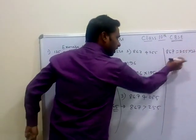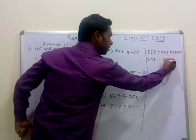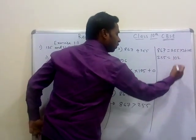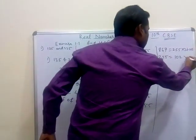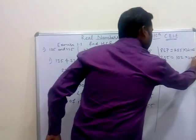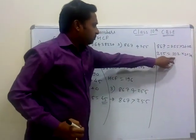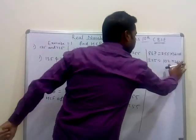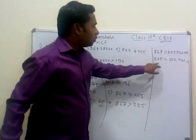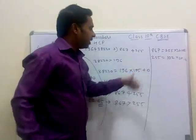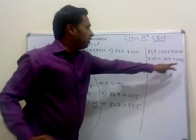Now we take 255 here as the new dividend with 102 as the new divisor. So 255 = 102 × 2 + remainder. 102 × 2 = 204. Subtracting 204 from 255, the remainder is 51. So remainder will be 51.